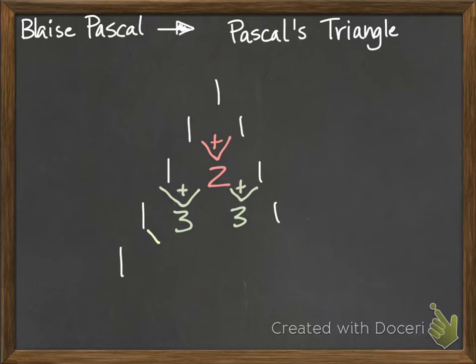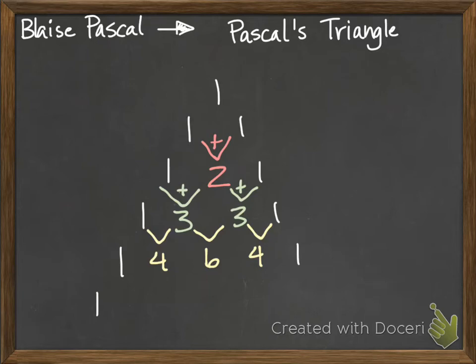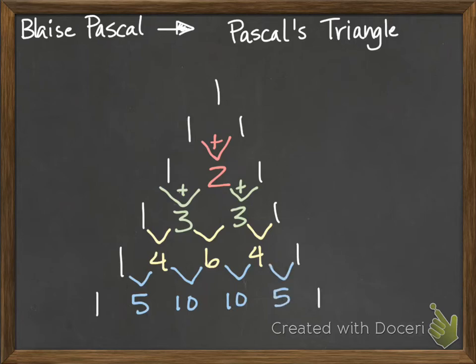Continuing: one, then one plus three is four, three plus three is six, three plus one is four, and a one on the outside. Next row: start with one, one plus four is five, four plus six is ten, six plus four is ten, four plus one is five, and a one on the outside.